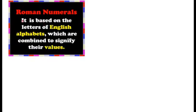The next rule: a symbol is not repeated more than three times, but V, L, and D are never repeated or subtracted. For 30, we write X three times — that is the maximum repetition. For 40, we cannot write XXXX (four times) so instead we write XL, applying the subtraction rule: L minus X equals 50 minus 10 equals 40.